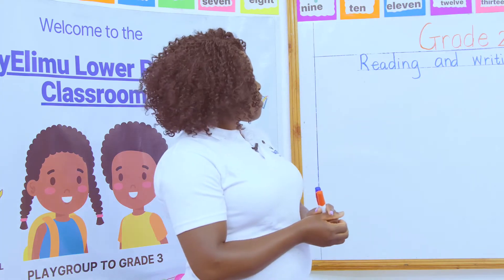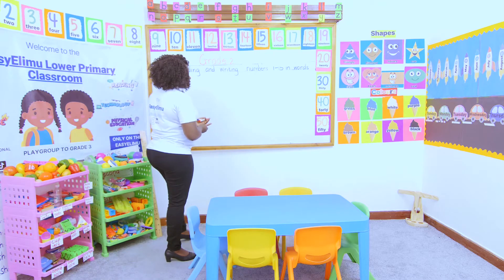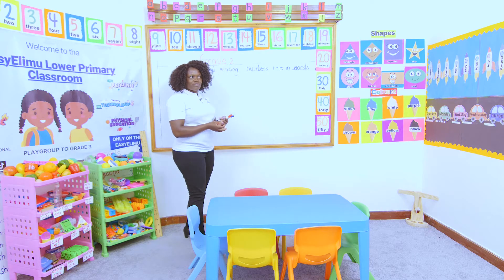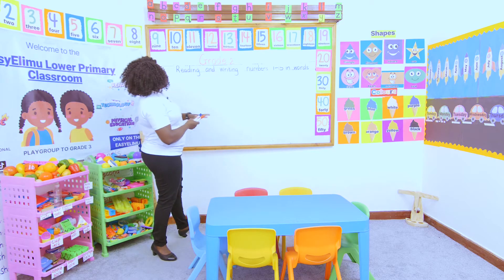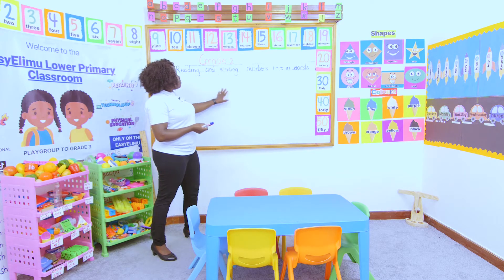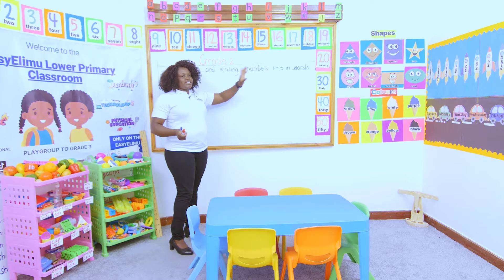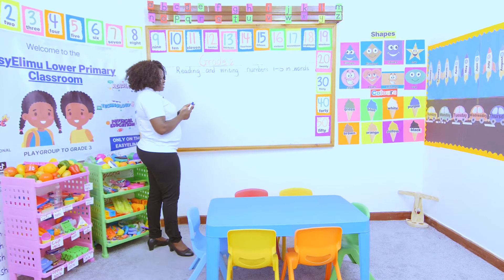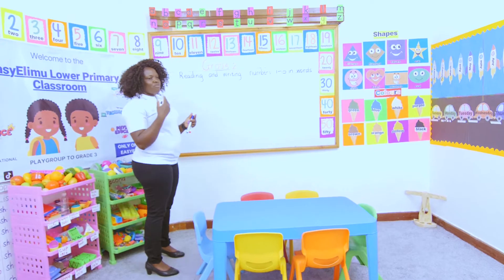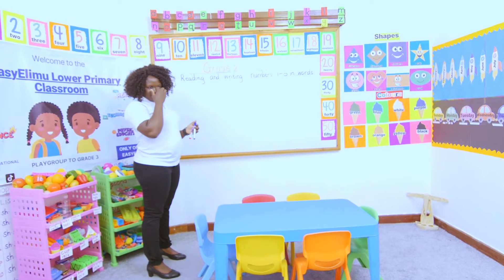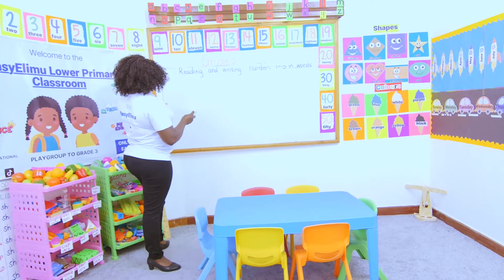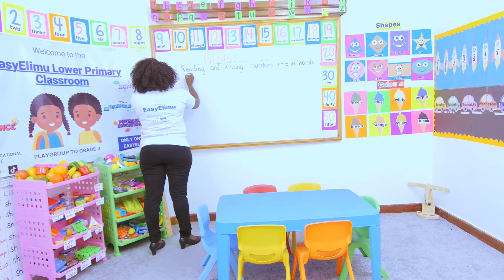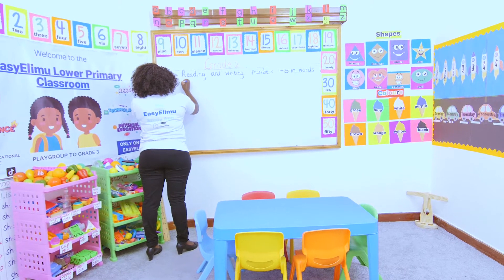We've been doing numbers — we wrote numbers one to five, we wrote numbers one to ten, and now we want to learn writing numbers one to fifteen. Who can give us a quick review of what we did in the two previous lessons?